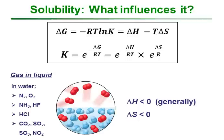We can also get quite high solubilities when gas molecules react with water. For example, hydrogen chloride gas dissociates to form hydronium and chloride ions, i.e. hydrochloric acid. Carbon dioxide reacts to form carbonic acid, sulfur dioxide forms sulfurous acid, sulfur trioxide forms sulfuric acid, and nitrogen dioxide forms a mixture of nitrous and nitric acid. In these cases we can get greater solubilities because of these types of reactions and interactions.